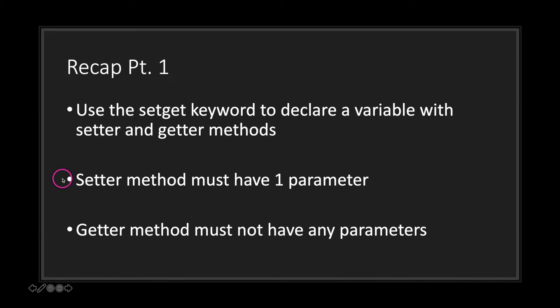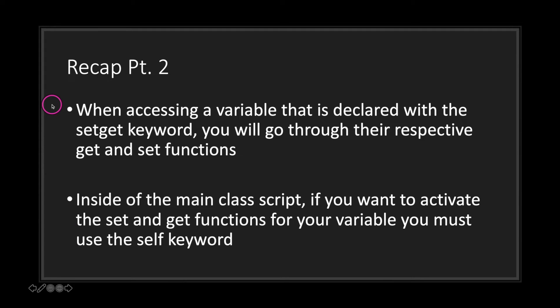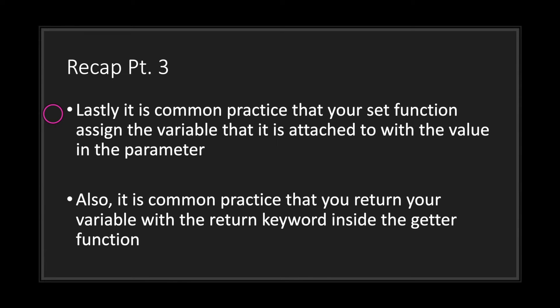To summarize: use the setget keyword to declare a variable with setter and getter methods. The setter method must have one parameter and the getter method must not have any parameters. When accessing a variable declared with setget you will go through the respective getter and setter functions. Inside the main class, use the self keyword to activate the setter and getter. It is common practice that your setter assigns the parameter value to the variable, and your getter returns the variable using the return keyword.